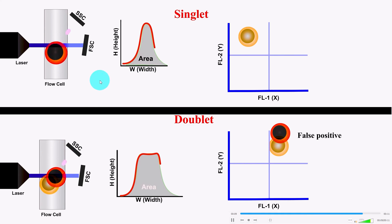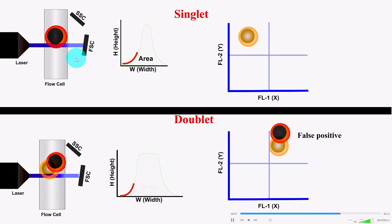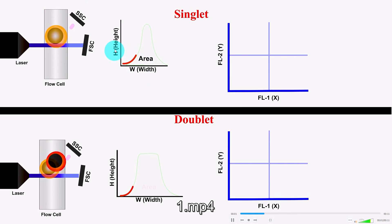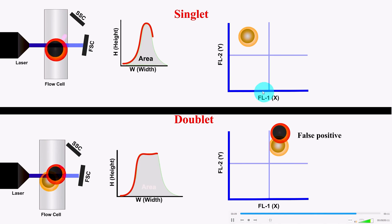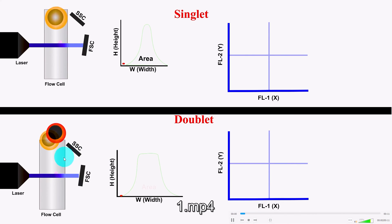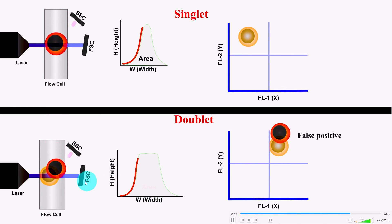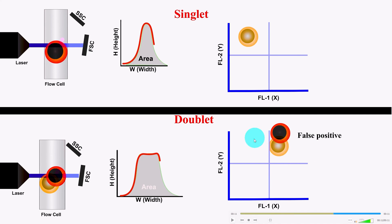Now I'm going to show singlet and doublet cells in animation — what happens when they pass through the flow cell. In the case of a single cell, you can see the signal detected by SSC and FSC, and the plot of height, width, and area. Cells are plotted FL1 versus FL2, showing cells positive for each marker. But when cells are aggregated, both cells pass through the flow cell together, the area, height, and width all change, and the cells appear double-positive — not because they truly are, but due to the aggregate. That's why it is very important to remove these doublets from your data analysis.